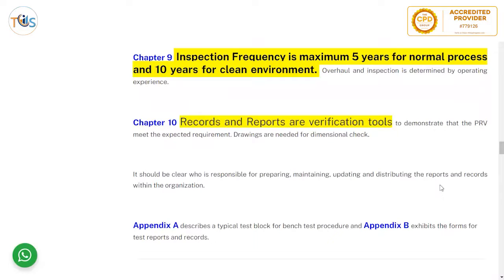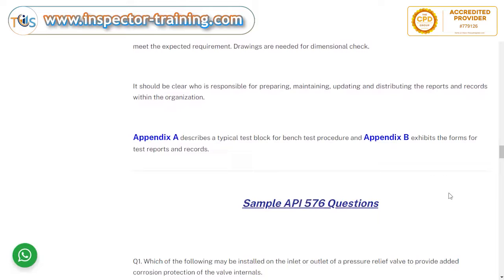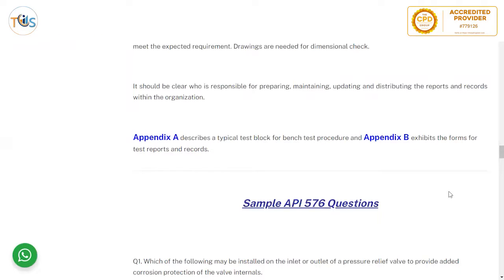Records and reports are verification tools to demonstrate that pressure relief valves meet expected requirements. Drawings are needed for dimensional checks to verify components are within tolerances. It should be clear who is responsible for preparing, maintaining, updating, and distributing the reports and records within the organization, as part of the QA manual. Appendix A describes a typical bench test procedure, and Appendix B exhibits forms for test reports and records.